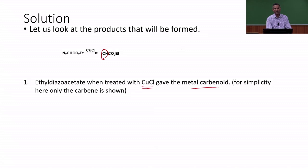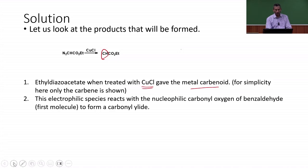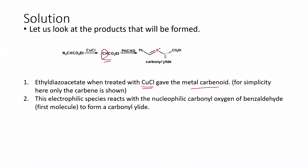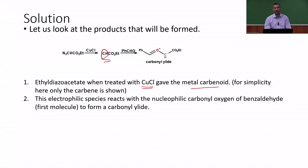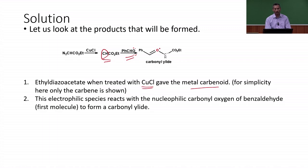This carbene intermediate has 6 electrons and is electrophilic in nature, since 8 electrons is the most stable configuration — the carbene is 2 electrons short. The benzaldehyde oxygen has 2 lone pairs and is electron-rich, i.e., nucleophilic. So we have an electrophilic carbene and a nucleophilic carbonyl oxygen. The nucleophilic carbonyl oxygen of benzaldehyde reacts with the carbene, giving a carbonyl ylide as intermediate A.